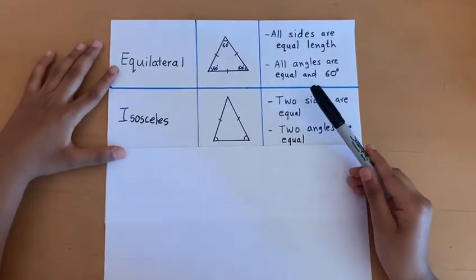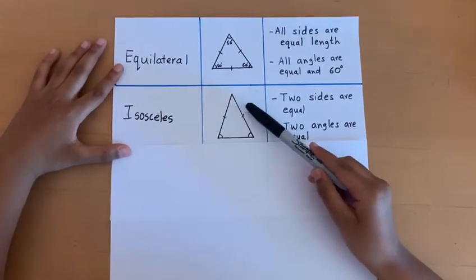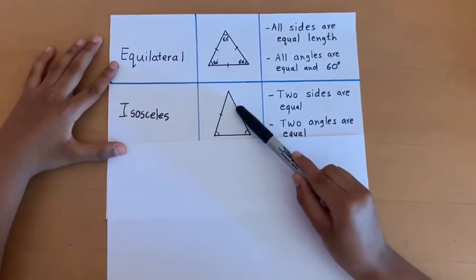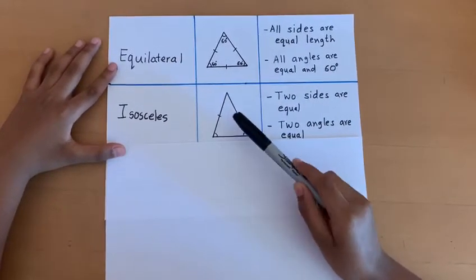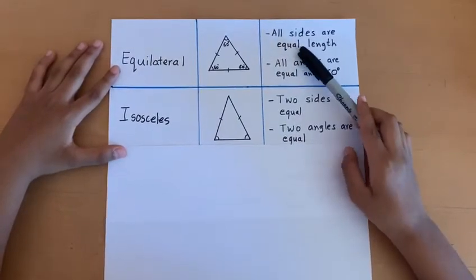We can identify which angles are equal because they are opposite from the equal sides. This angle is opposite from this side and this angle is opposite from this side. This is what makes up an isosceles triangle.